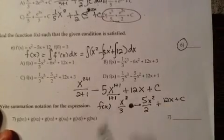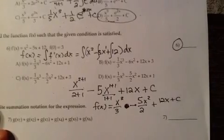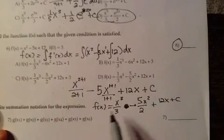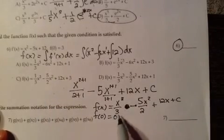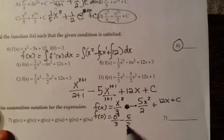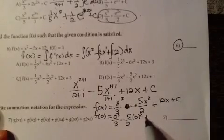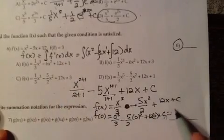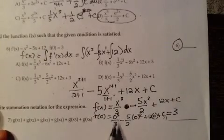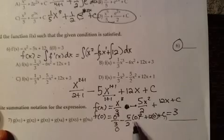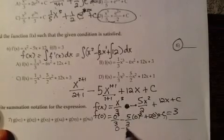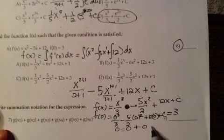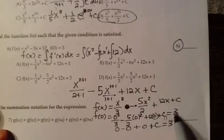Now, the problem gave us an initial condition that f of 0 is 3. So f of 0, if we replace all the x's with zeros, then the y value should end up equaling 3. Zero to the third is zero divided by 3, that's just zero. Zero squared is zero times any number, that's zero. Twelve times zero is zero. So on the left side, we just have c, and that equals 3.